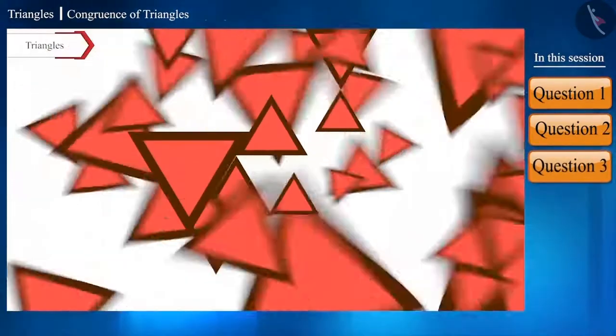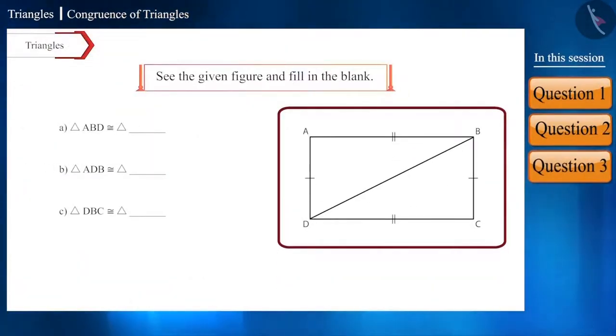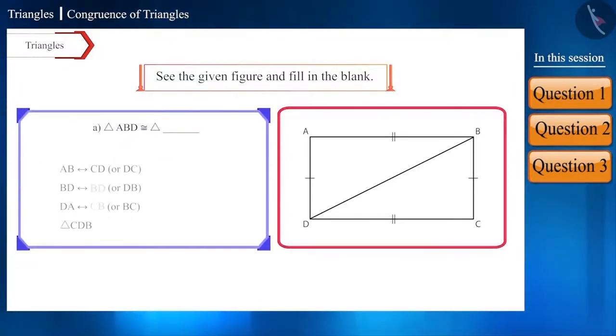Let's take the next question. Two triangles are made in the given rectangle, and the names of some triangles are also given. Give the names of the triangles congruent to those triangles. Now, look at the figure and tell which side is congruent to side AB. That is, the side CD or DC.